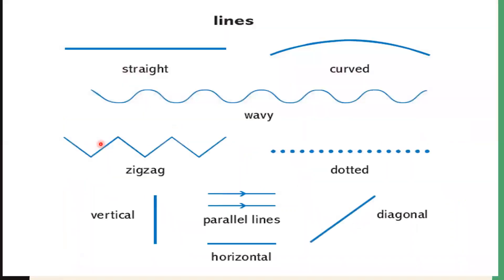The next type is a curved line — it waves like this. Here are a few more examples of lines: straight, curved, wavy, zigzag, dotted, vertical, horizontal, diagonal (also called slanting), and parallel lines. Parallel means similar lines side by side, as you can see in the picture.